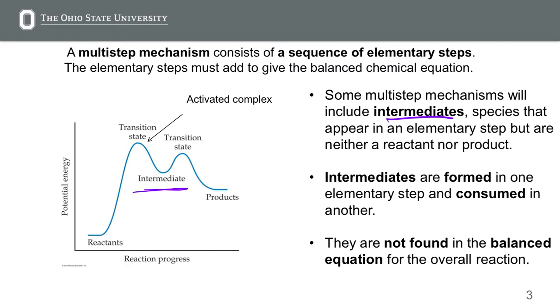They show up, and then they react - they're formed and then they go away. They do not show up in the overall balanced equation. This is why we have to use fast spectroscopy to figure out that they're there.